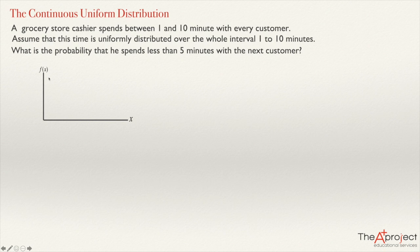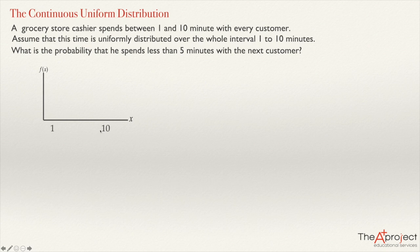What do we know from this problem? We know that the random variable X goes from one to ten minutes — the time that the cashier spent with the customer is between one and ten minutes. So the value of X will be between one and ten minutes. We also know that this variable, the time, is uniformly distributed.